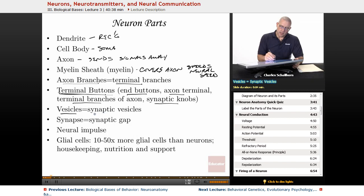There are vesicles, otherwise known as synaptic vesicles. They're right near the synapse. The synapse is sometimes called the synaptic gap. There is neural impulse, and that's going to be the way the electrical signal is moving within the neuron.